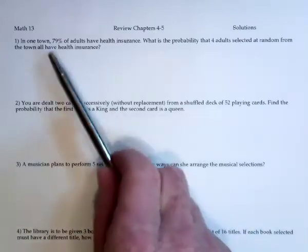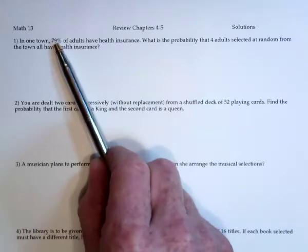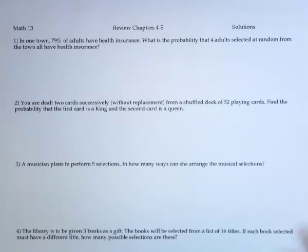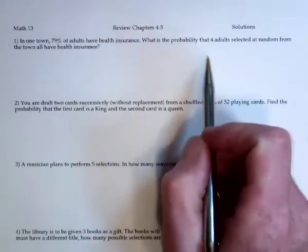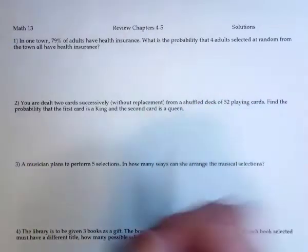This first problem is a binomial situation. We're given this probability of 0.79, or 79% of people have health insurance. So the probability that all four out of four are going to have health insurance...